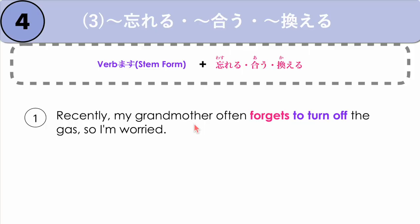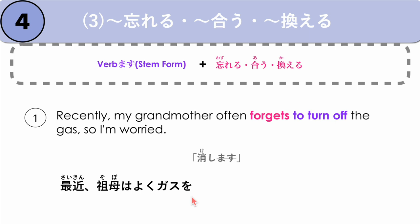For example: my grandmother often forgets to turn off the gas, so I'm worried. Saikin, sobo wa yoku, gasu wo — our verb is to turn off: keshimasu. We say keshi, we get the stem keshi, plus to forget: wasureru. Keshi wasureru no de, sinpai da. Because she often forgets to turn off the gas, I'm worried. Saikin, sobo wa yoku, gasu wo keshi wasureru no de, sinpai da.